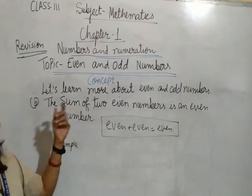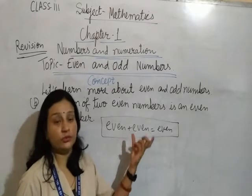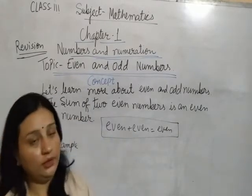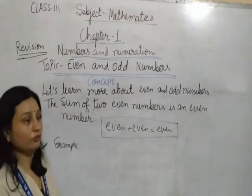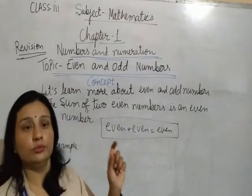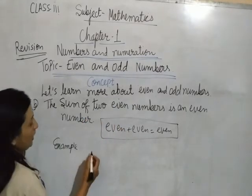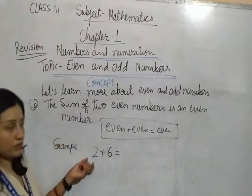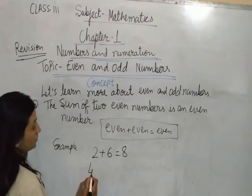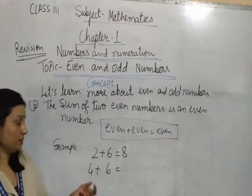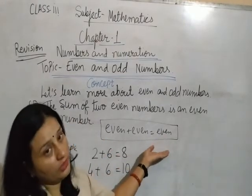Second point: the sum of 2 even numbers is an even number. Any 2 even numbers you add, the answer is always even. For example, 2 plus 6 — 2 is even, 6 is even, 2 plus 6 equals 8, which is again even. Another example: 4 plus 6 equals 10, which is even. The sum of 2 even numbers is always an even number.